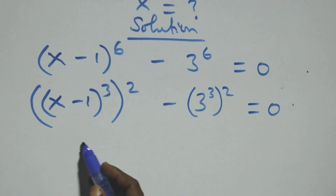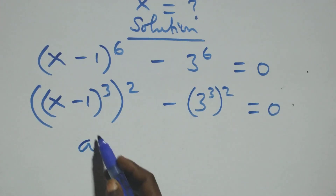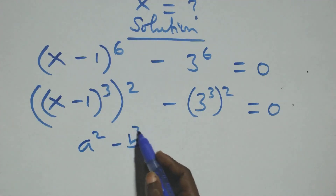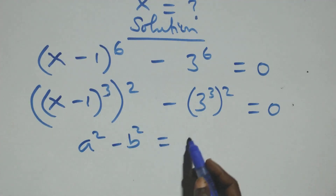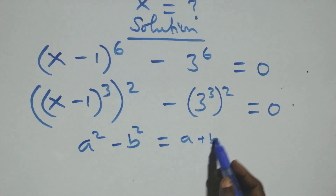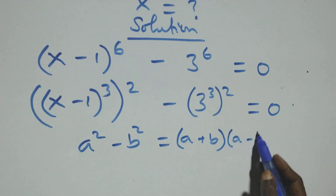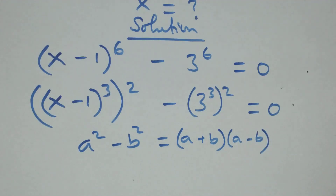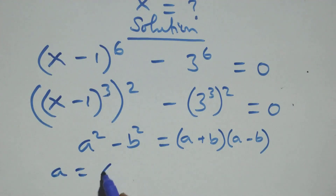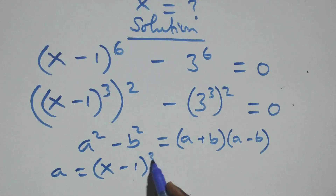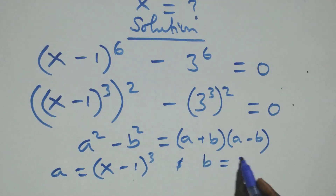This follows when we have a squared minus b squared, which can be written as a plus b, into brackets, open brackets, a minus b. Here, a stands for x minus 1 raised to the power 3, and b stands for 3 raised to the power 3.